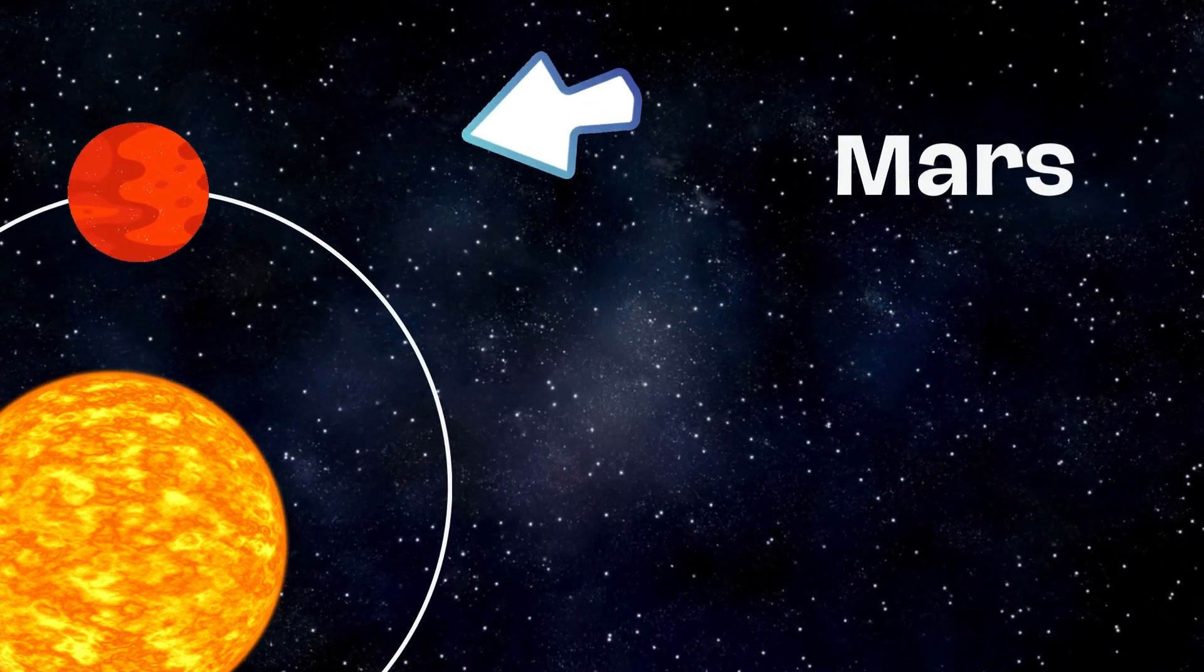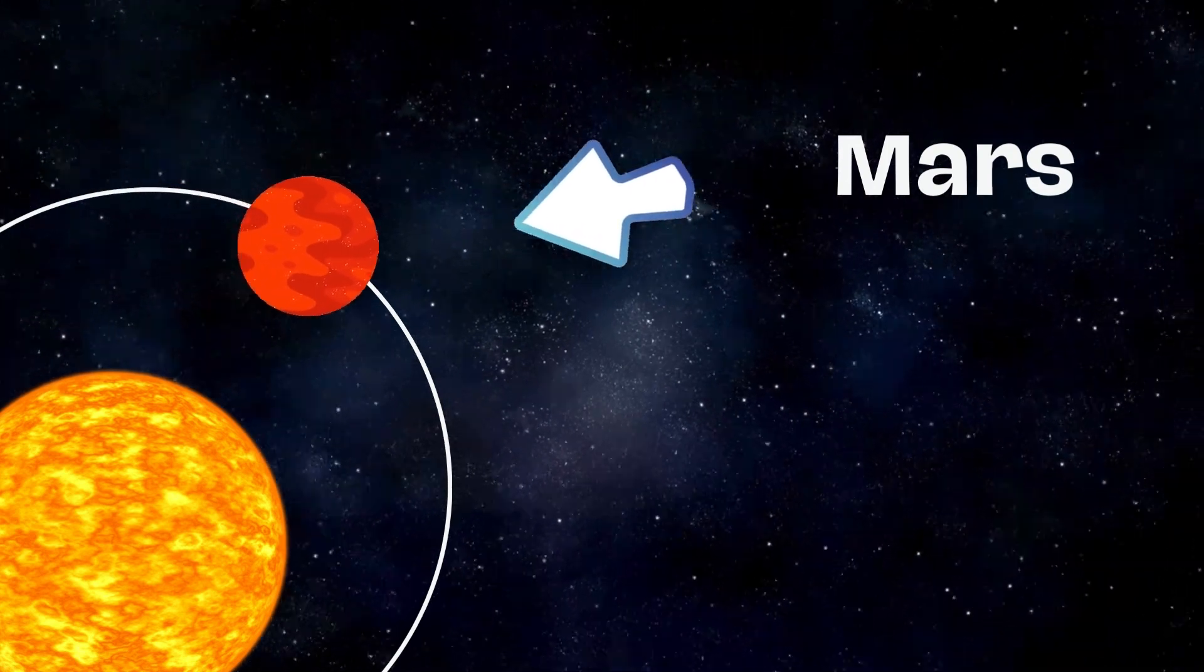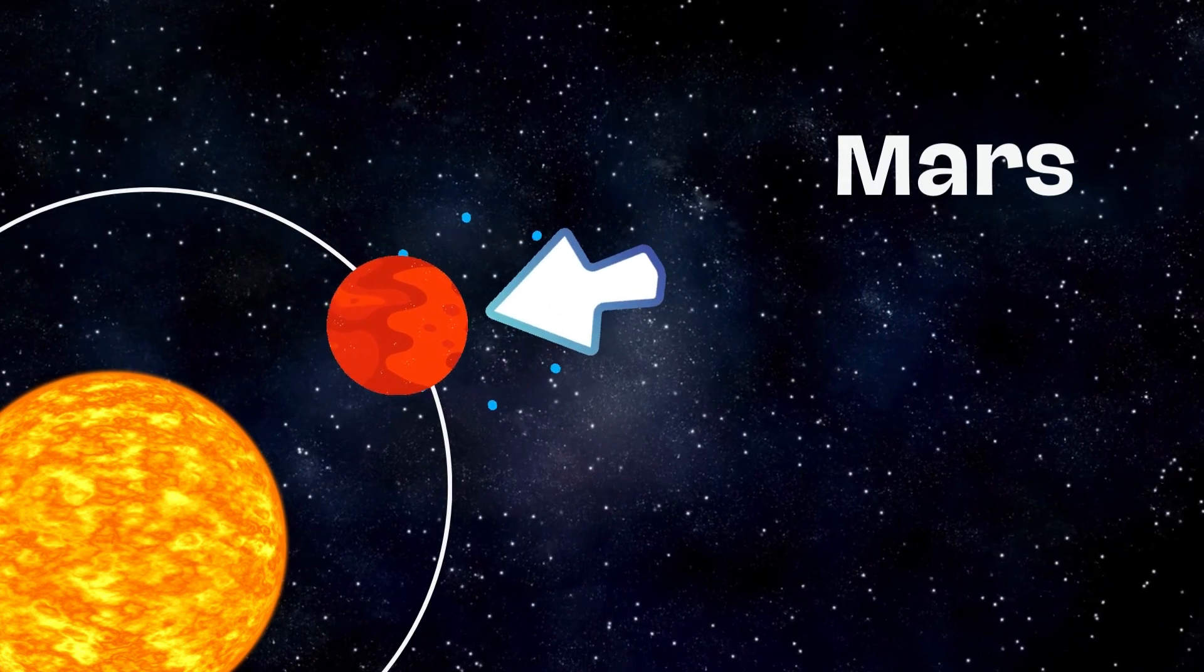Mars, known as the red planet because it looks red in the sky. Scientists are curious about Mars because it might have had water in the past.